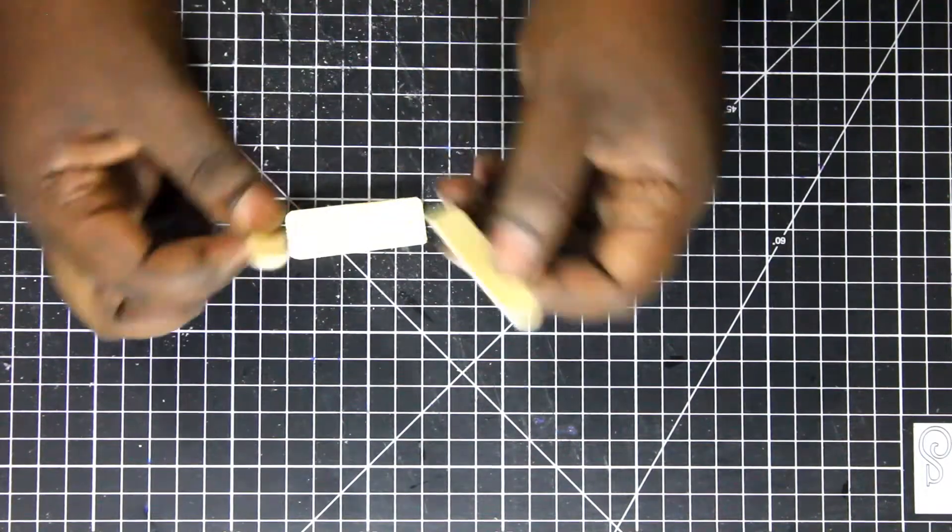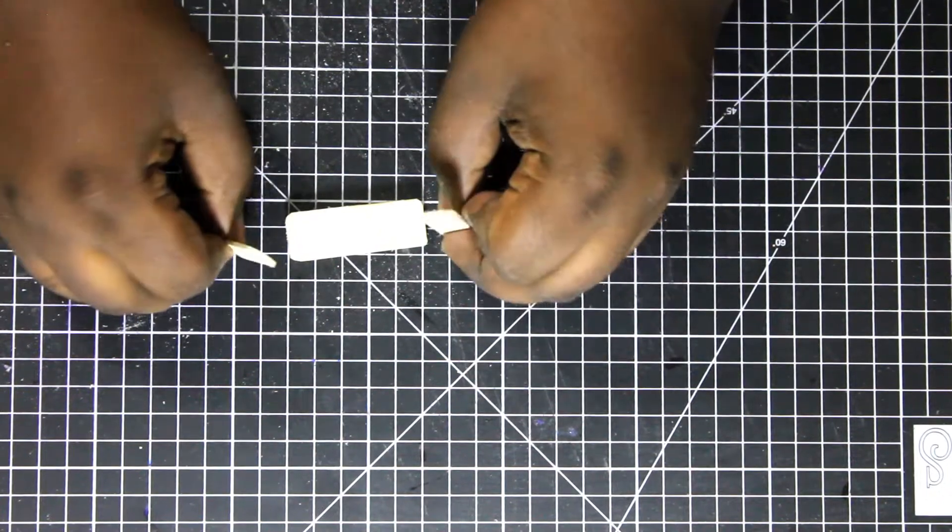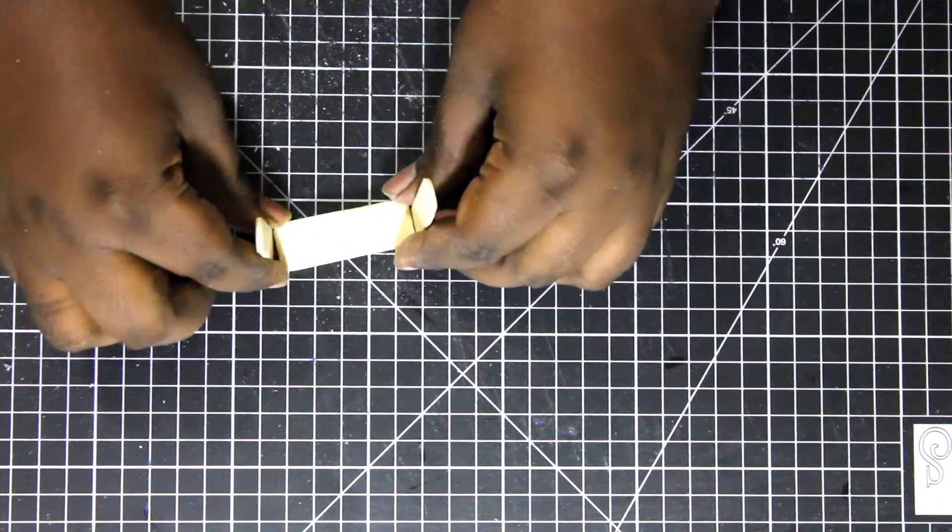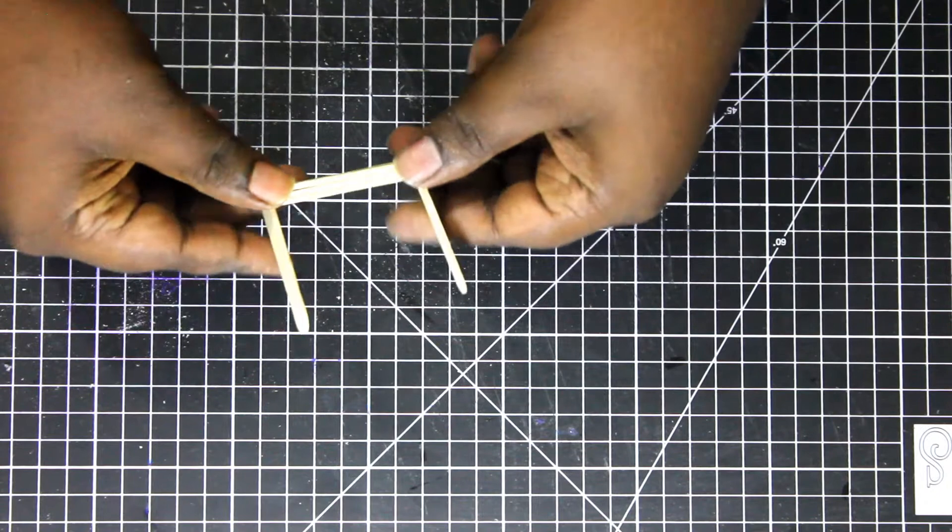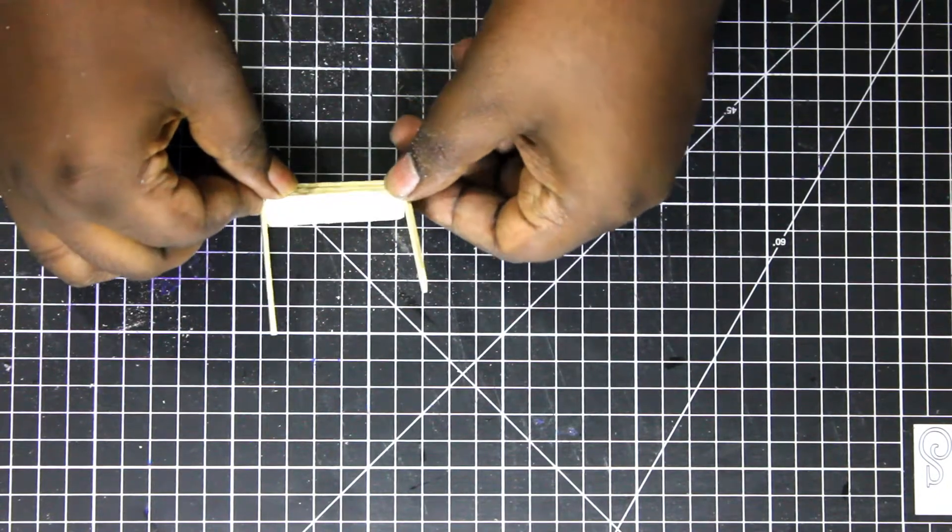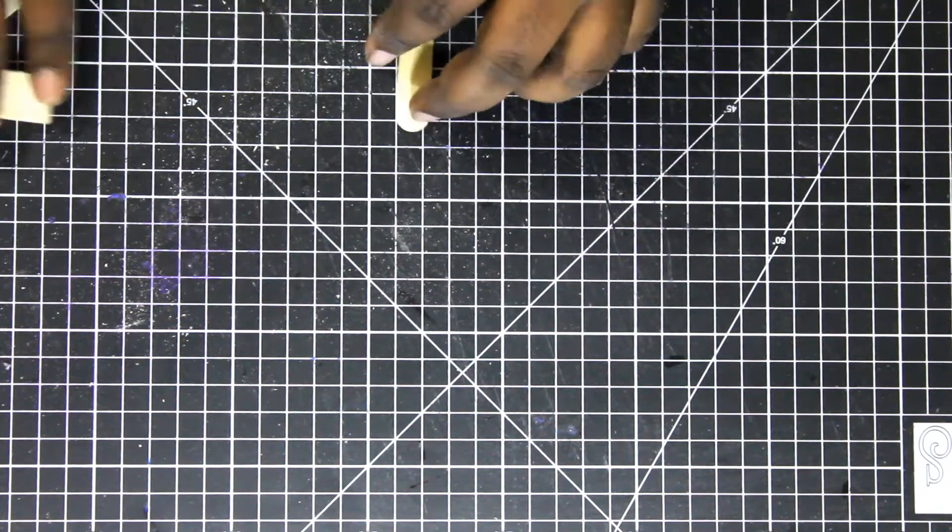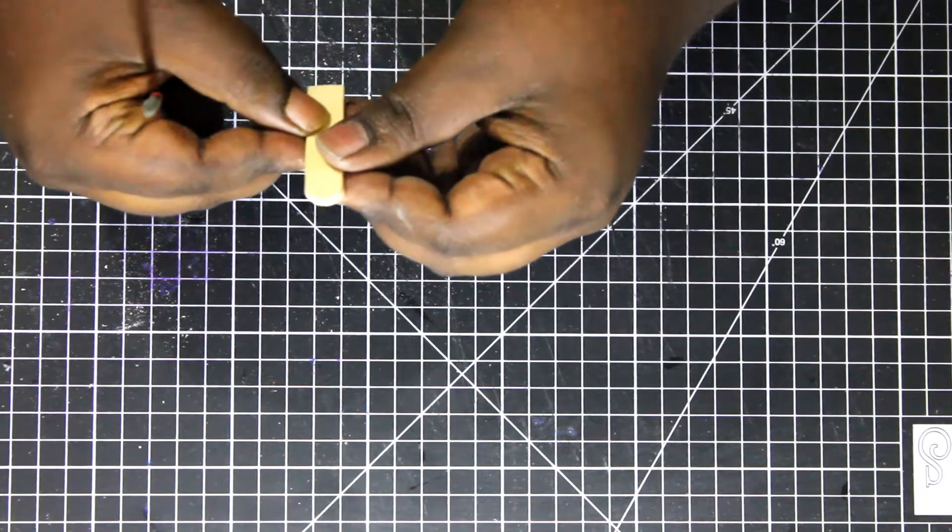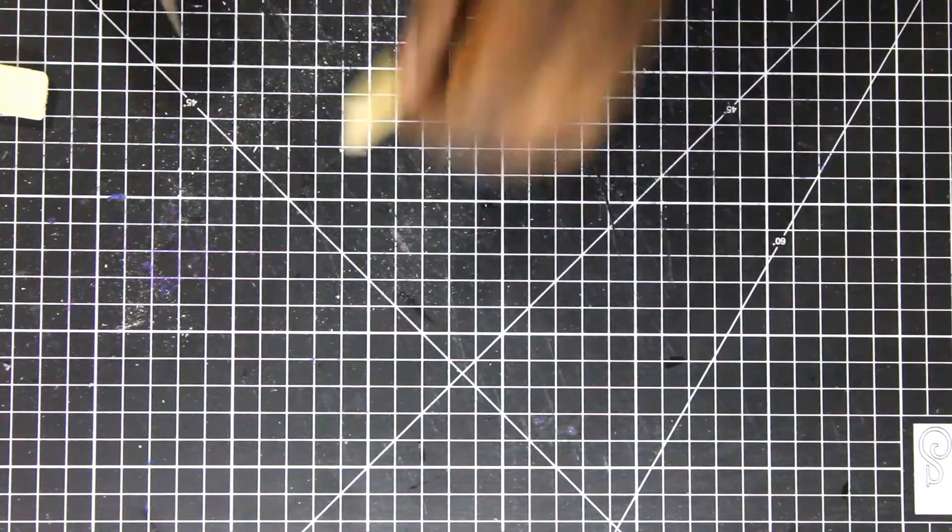Take a mini popsicle stick and cut it in half for the sides. Now stack the two pieces and put a rubber band to keep it together.